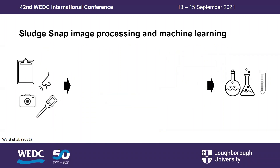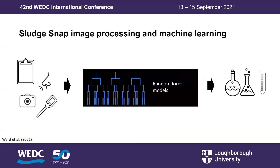We split the machine learning portion of the app into two parts: model training and model testing. For the training, we used data provided to reflect real sample results from the field. We reformatted that data, then used a random forest model in the scikit-learn library to create trained models for each individual target variable. During testing, it takes the inputs from the image processing portion along with other inputs and compares them to the trained models. Afterwards, the app outputs predicted values for each target variable.